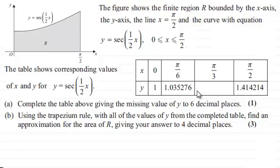Given this table showing corresponding values of x and y for y equals sec(x/2), in part (a) we need to complete the table giving the missing value of y to six decimal places for one mark. Then in part (b), use the trapezium rule with all values of y from the completed table to find an approximation for the area of R, giving your answer to four decimal places for three marks.